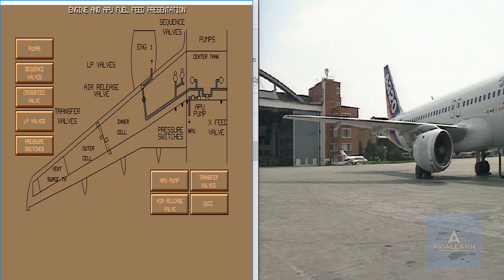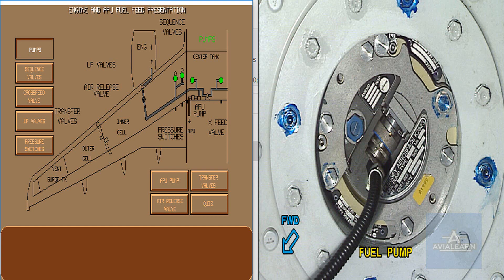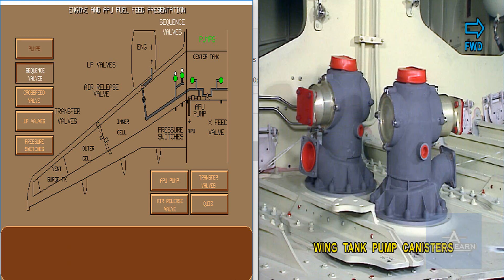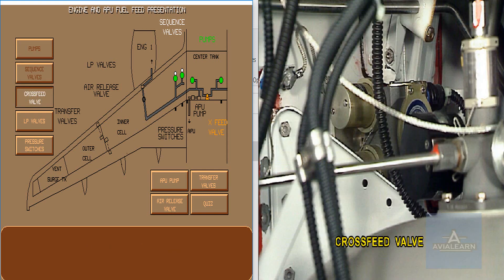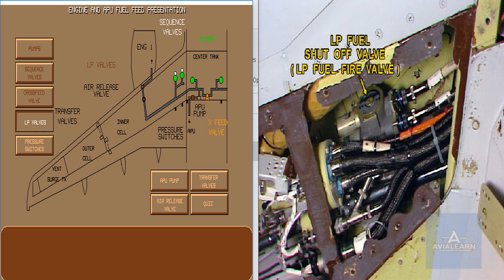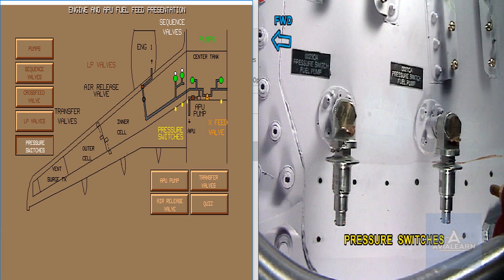Let us study the description of the main components of the fuel system. Each main tank has two centrifugal booster pumps capable of supplying the engines with fuel at the required pressure and flow rate. Pressure relief sequence valves on the wing tank pumps give priority to center tank pump supply. A cross-feed valve permits connection of the left and right engine supply lines. The low pressure valves isolate the engines or APU from the fuel supply. A pressure switch for each pump monitors the pump pressure for the low pressure warning.